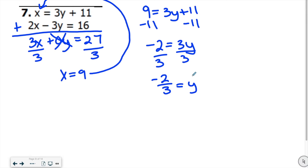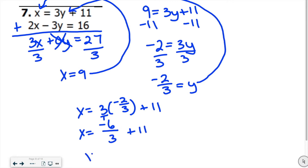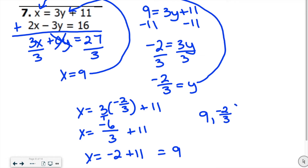I just want to make sure I did this right. So we added down and got 27, then got x equals 9, and plugged it back in — everything checks out. So negative 2 thirds for y. Plugging back into the first equation: x equals 3 times negative 2 thirds plus 11. 3 times negative 2 is negative 6 over 3, which is negative 2, plus 11 is positive 9. So when x is 9, y is negative 2 thirds. The solution is 9 comma negative 2 thirds.